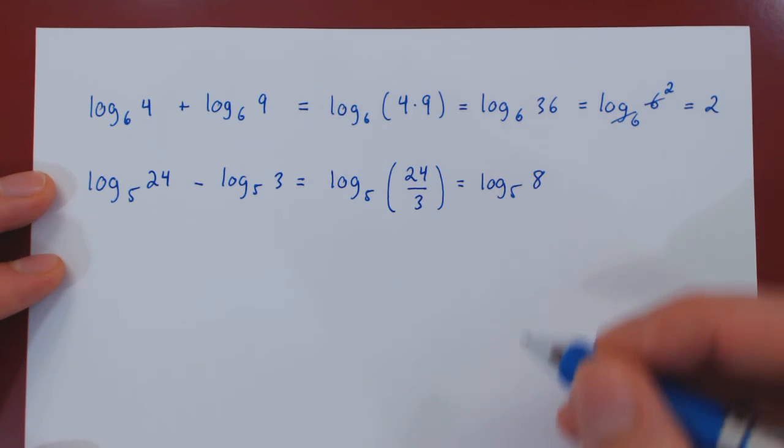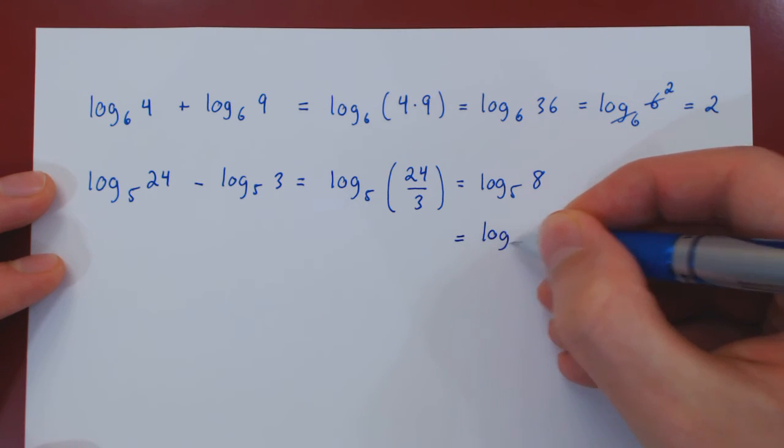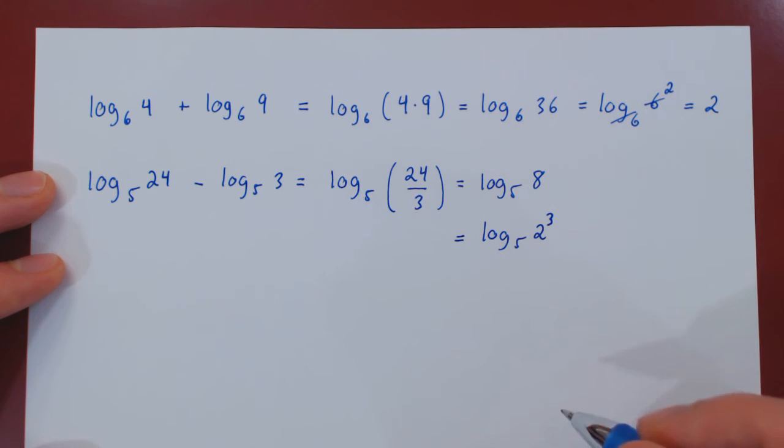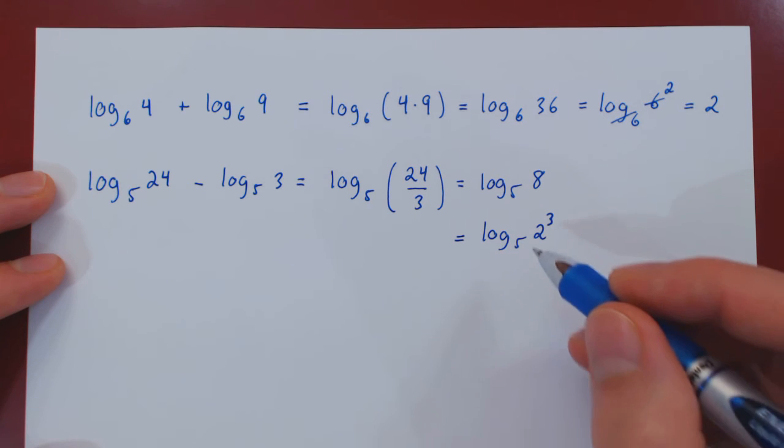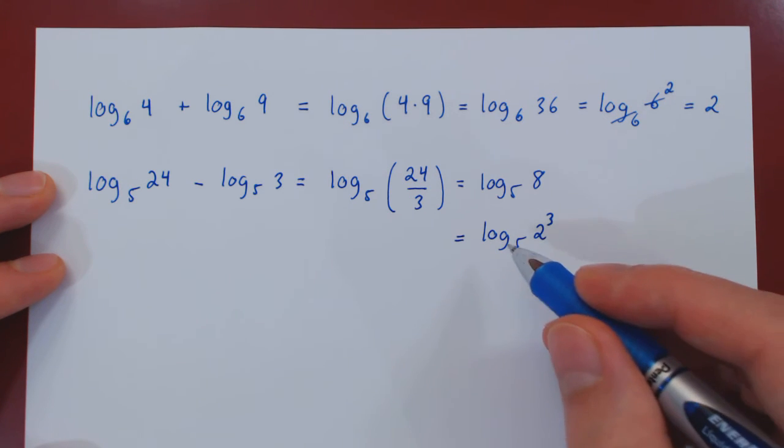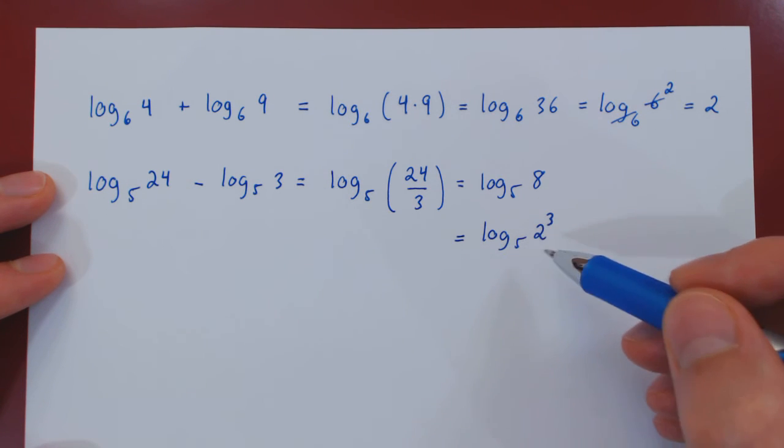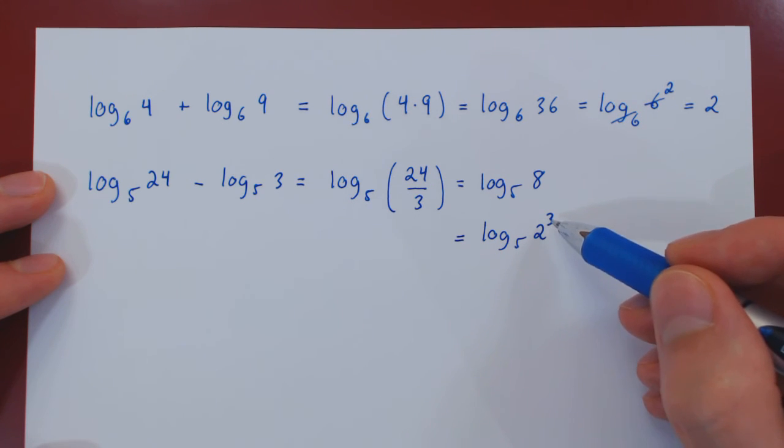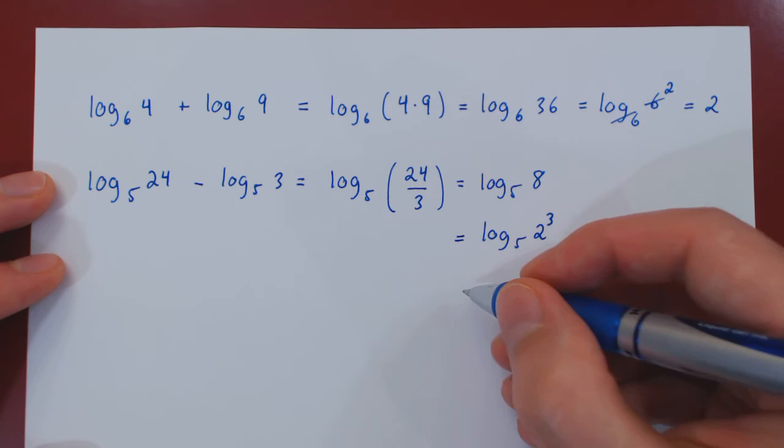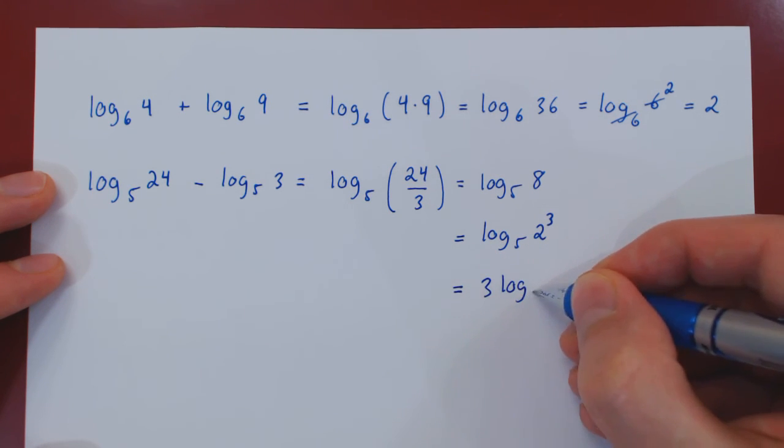But you can think of 8 being 2 cubed. And now of course the base of the exponential does not match with the base of the logarithm. So we can't just cancel these two. But we can use another property of logarithms, which is, if you take the log of an exponential, which is our case here, you can move the exponent at the front of the log as a constant multiple. So this is the same as 3 times the log base 5 of 2.